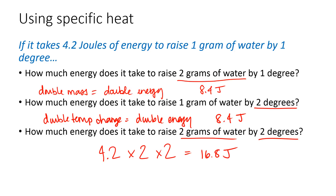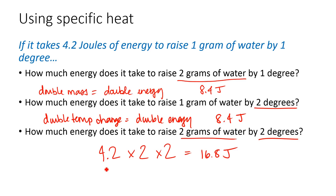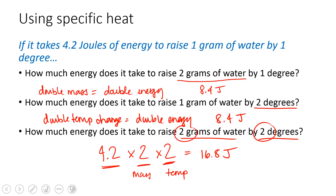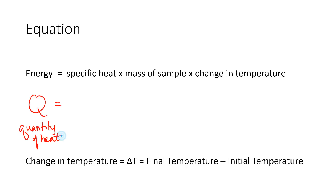So let's take this concept and turn it into an equation that we can use. If you notice what we did here, we took the specific heat of water, which was 4.2, and we ended up multiplying it by the mass and by the temperature change. So the amount of energy — we're going to use the symbol Q for energy, which might seem weird, but Q stands for quantity of heat. So that's the amount of energy times the specific heat, which we use the symbol C for specific heat.